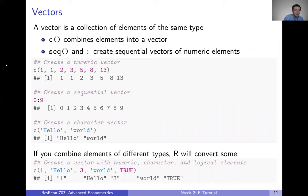The first type of structure is a vector. A vector is just a collection of elements of the same type. There are a couple of different ways to create vectors. We can use the C function — which stands for combine or concatenate — to combine elements into a vector. We can also use seq or just a colon to create sequential vectors of numeric elements.